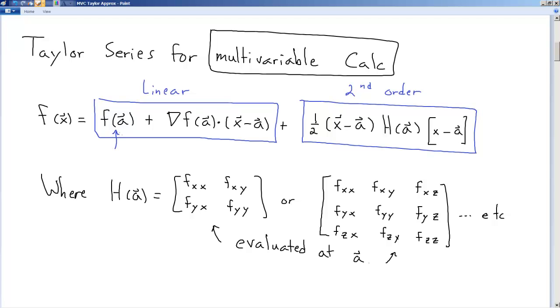Linear portion should look familiar. Your function evaluated at the vector instead of the point. And instead of the first derivative, f prime of a, what you have is the equivalent of this is the gradient of the function evaluated at the vector in question. And then we dot that with the difference vector.